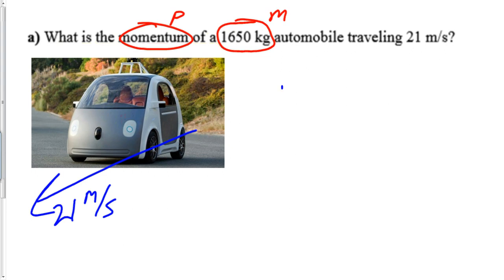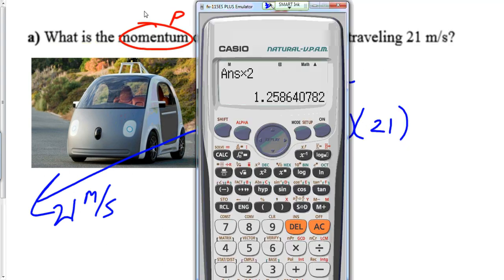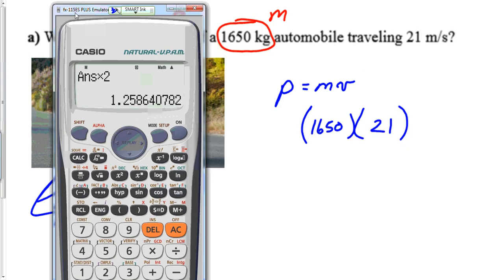What is this car's momentum? Rho is equal to mv, so all we have to do is 1650 times 21 and that problem is over.